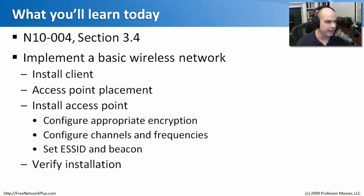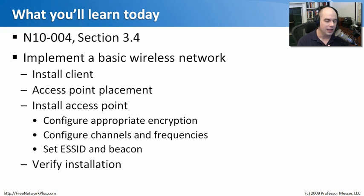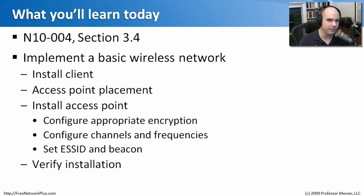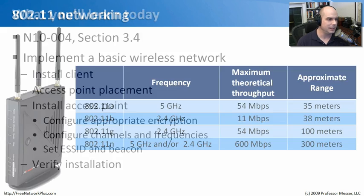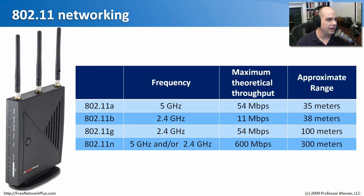We need to install clients. We need to put the access point somewhere — where do we put it? We need to install the access point with encryption, and what channels and frequencies we're using. Do we set ESSIDs? What are those beacon configurations going to be? And finally, how are we going to verify that our wireless network is now operating properly? So let's get started with the 802.11 networking overview.